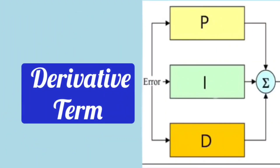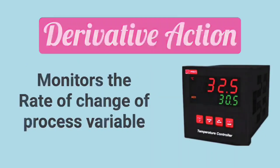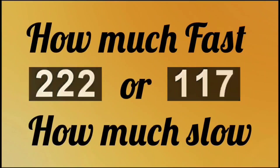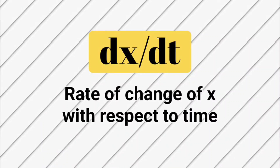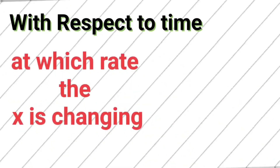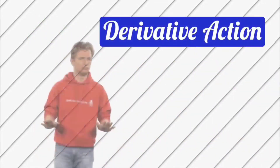Now let's understand D for derivative term. The derivative action monitors the rate at which the process variable is changing — how fast or how slowly the change is happening. As we have studied in mathematics, dx/dt is the rate of change of x with respect to time, which is derivative or differentiation. Here, it is the rate of change of error with respect to time. That's why it is called the derivative term or derivative action.